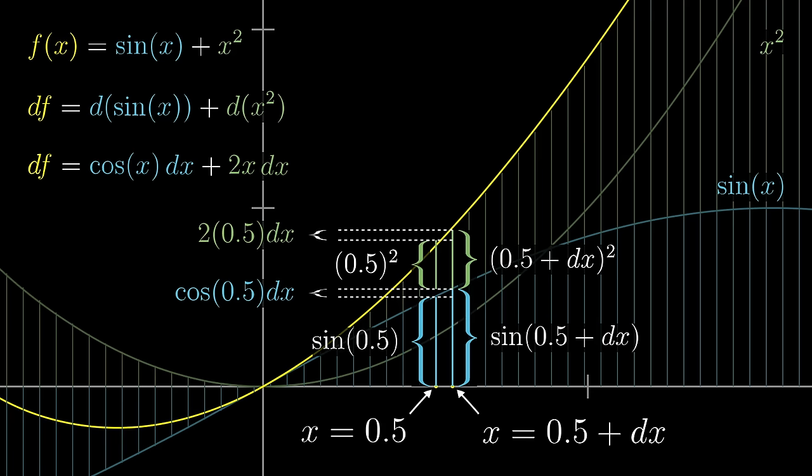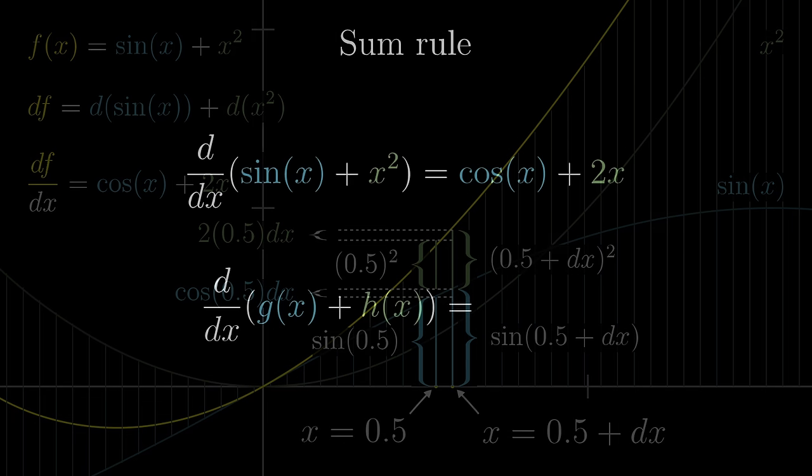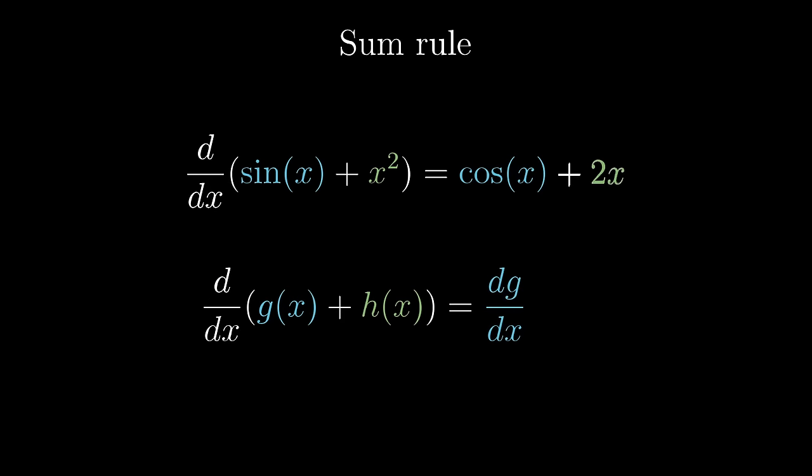So rearranging, df divided by dx, the ratio of the tiny change to this sum function to the tiny change in x that caused it, is indeed cosine of x plus 2x, the sum of the derivatives of its parts.